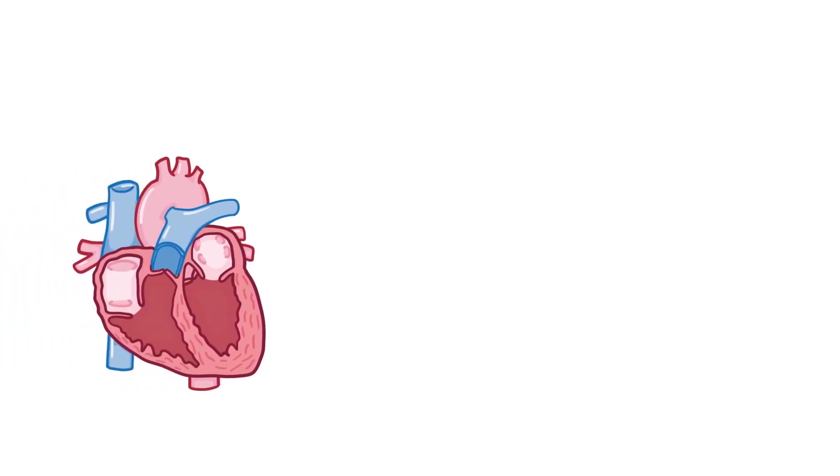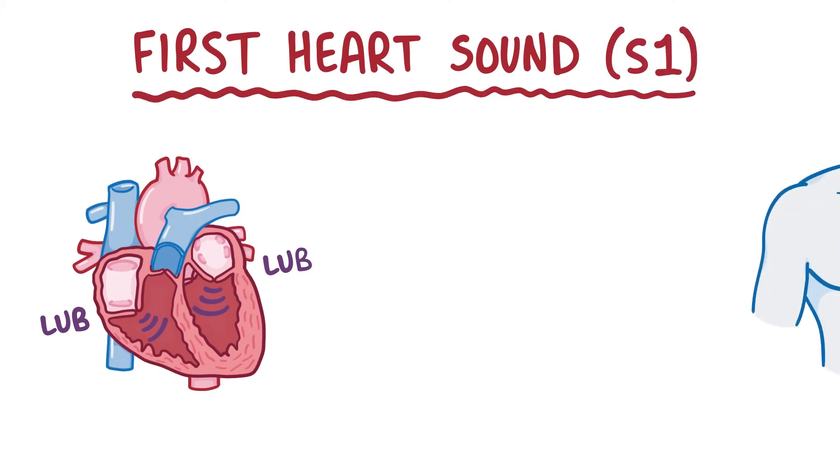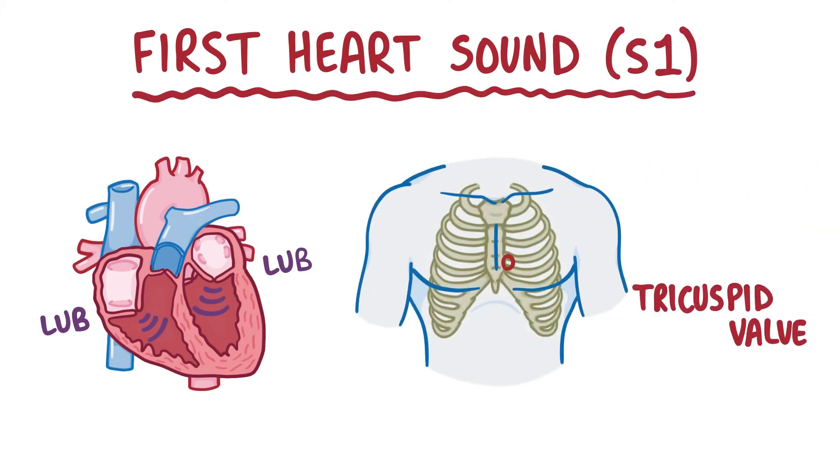Now once the ventricles have filled up, both of the atrioventricular valves snap shut, creating a long loud sound that sounds a bit like lub. And that's the first heart sound, or S1, and because it's basically the tricuspid and mitral valve closing, it's best heard in the tricuspid valve and mitral valve areas.